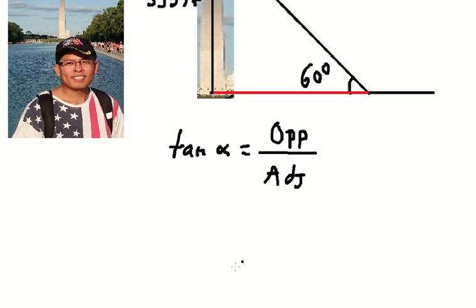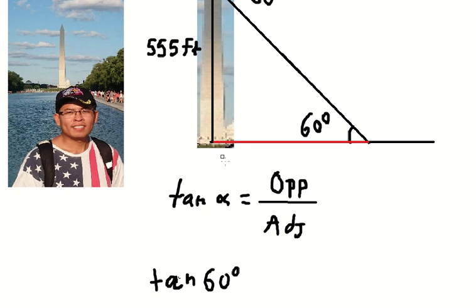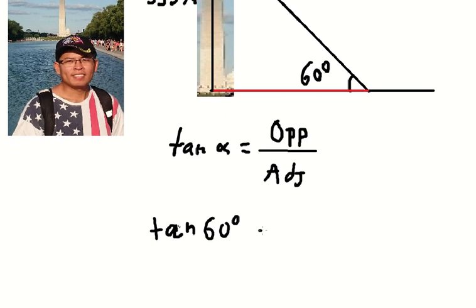So we can see that we have tan of 60 degrees. So if we look carefully, the opposite is about this number, so adjacent is about this one.